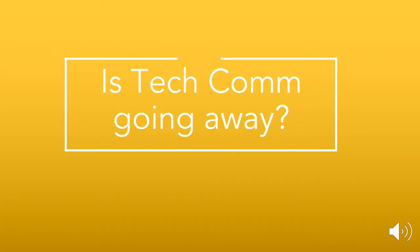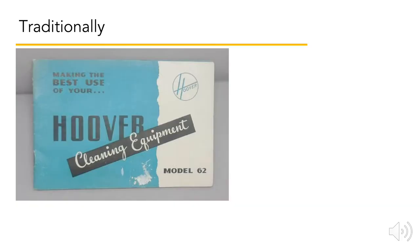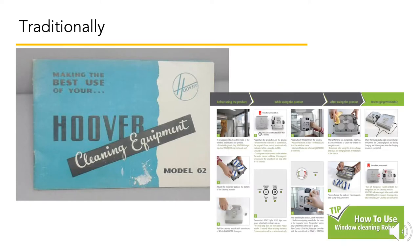Those of you interested in pursuing a major, minor, or certification in technical communication should be thinking about the question: is technical communication going away? The traditional view of a technical communicator or technical writer is someone who produces documentation for products and software. This documentation might include topics like getting started, instructions for use, troubleshooting, and FAQs. As we saw earlier, there are actually many other genres of technical communication. But this type of commercial product documentation is often seen as the main source of employment for technical communicators.